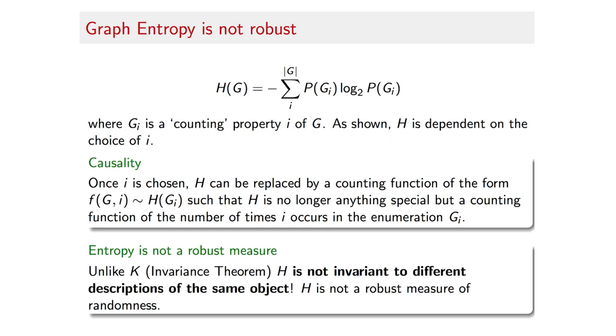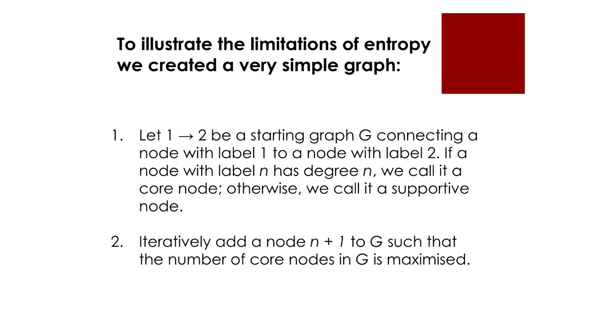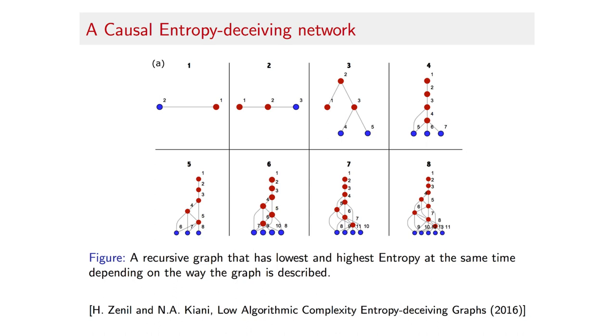We denote by ZK a graph unequivocally constructed as follows. Let a node labeled as 1 be connected to another node labeled 2 to be a starting graph G. If a node with label n has degree n, we call that node a core node, otherwise we call it a supportive node. Iteratively, add a node n plus 1 to G such that the number of core nodes in G is maximized. That is, we aim at adding nodes whose number of edges is the same number as their labels.